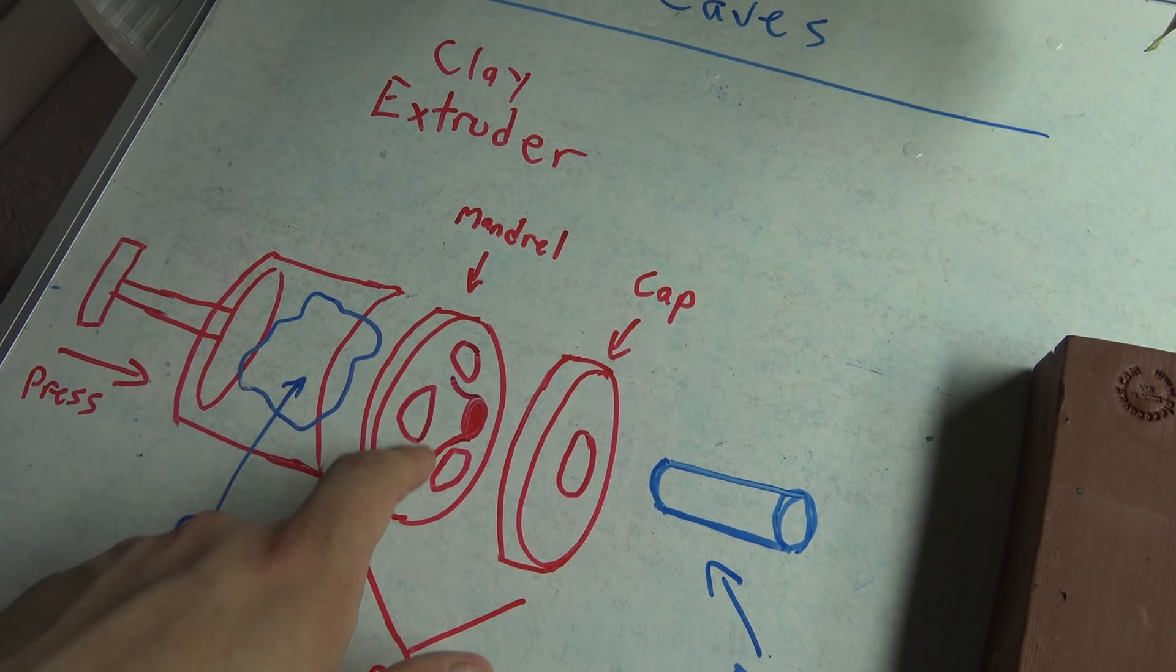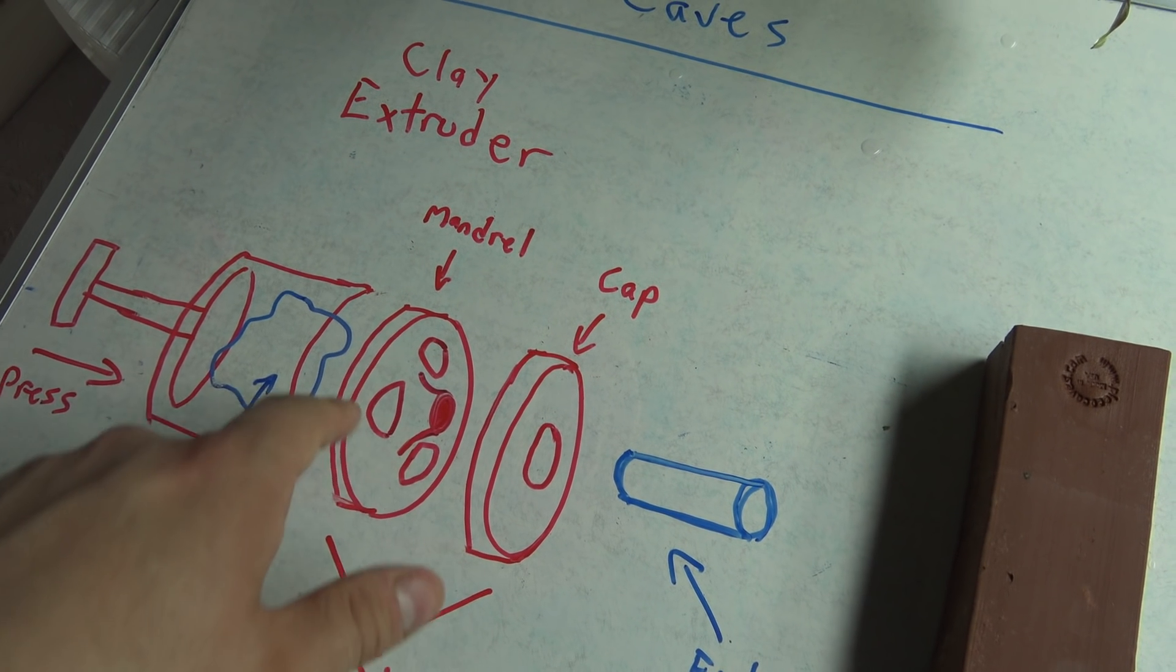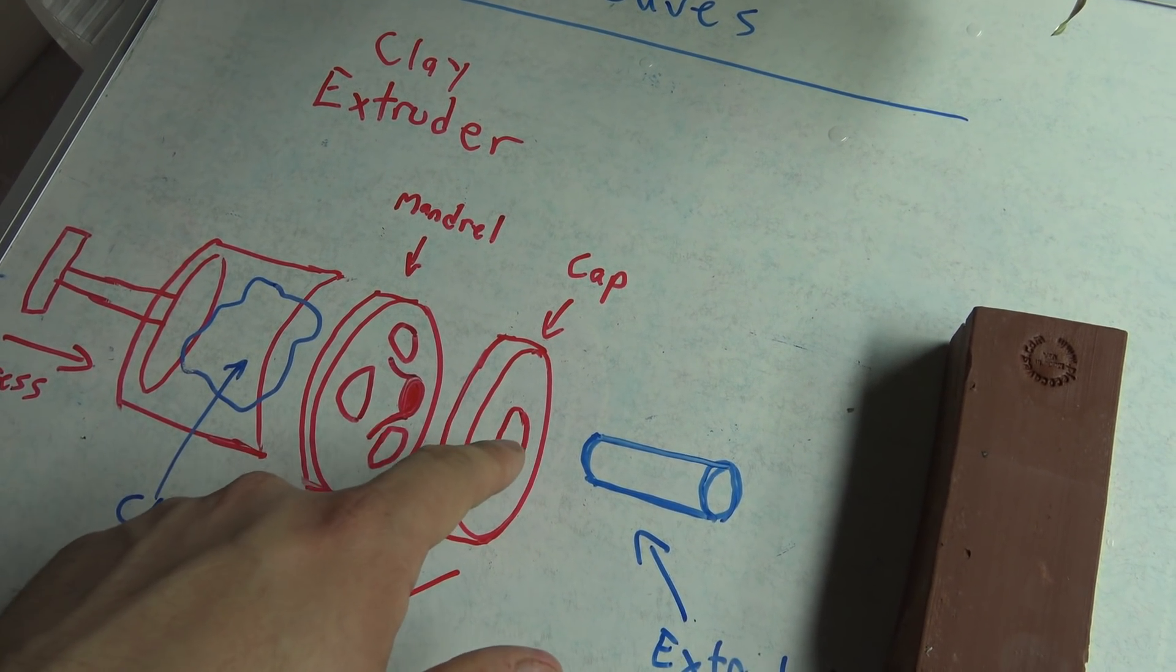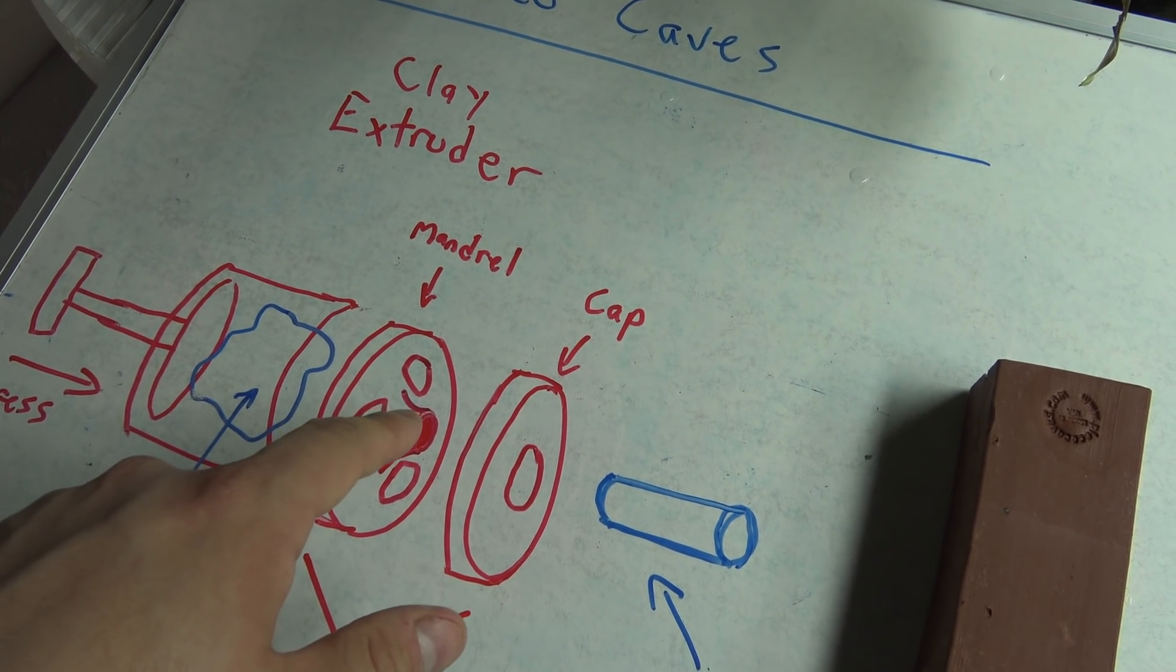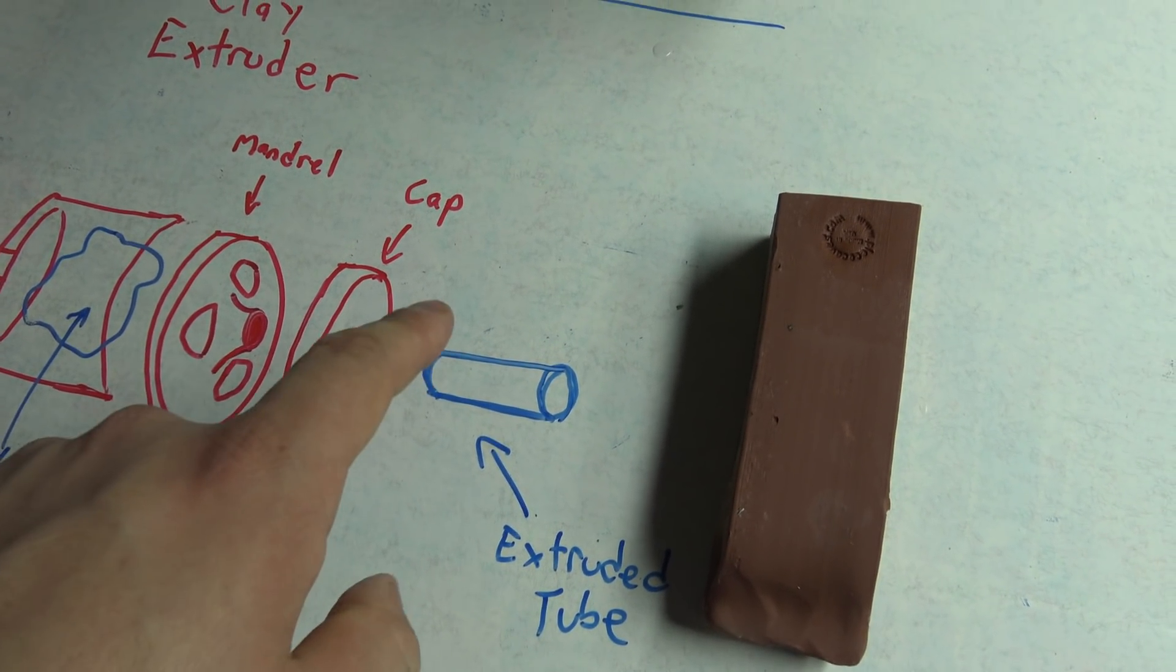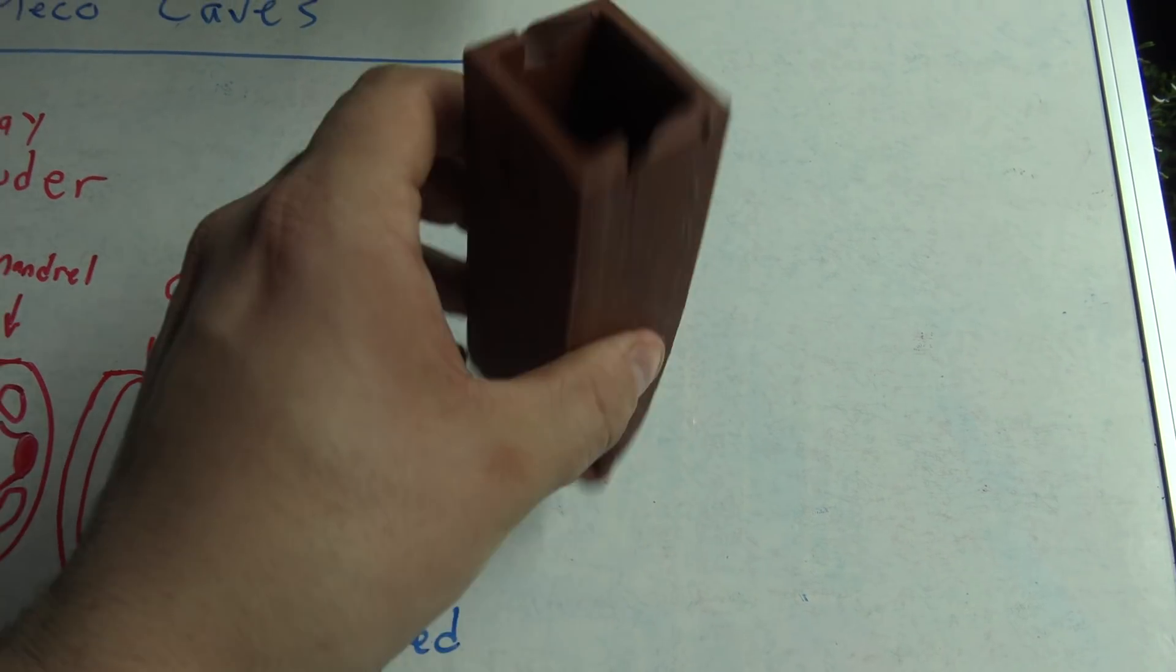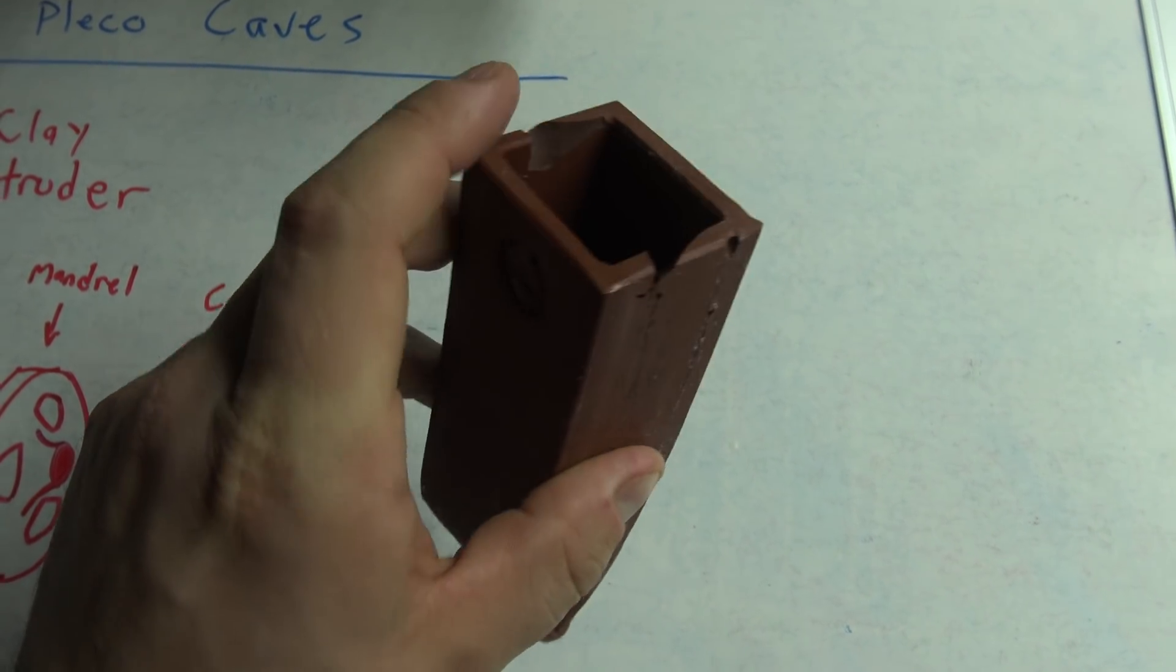Essentially, what the mandrel does is it allows your clay to pass through several holes on its way through the cap. And the mandrel and the cap fit together in a way where it creates an extruded tube or an extruded shape, which is hollow on the inside, just like this, has very uniform wall thicknesses.